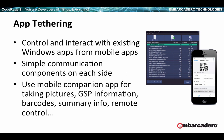The way app tethering works is simple communication components that live on each side. The app being controlled makes some actions available or says it can accept a certain type of input. The other app, through connecting, can find which actions are available and call those actions remotely. Think of companion apps — maybe scanning a barcode with your phone camera and easily sending that over to your desktop app as a picture or string. I've heard great use cases from customers really taking this to extend existing applications and add unique features.